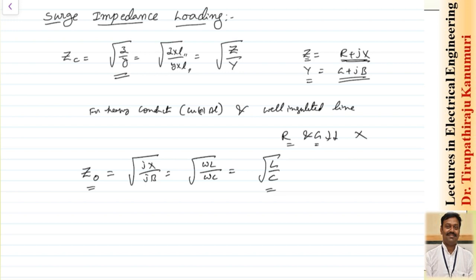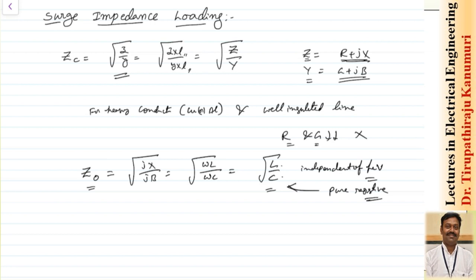Both L and C are independent of frequency because the frequency component cancels out. The resulting ratio is purely resistive, and the corresponding load is called a pure resistive load. In summary, the surge impedance is the characteristic impedance of a loss-free line. For transmission lines, where L dominates over C, the surge impedance varies from 400 to 600 ohms.